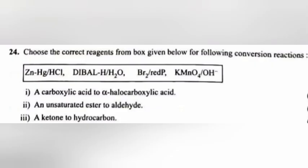Question 24: Choose the correct reagent from the box given below for the following conversion reactions. 24.1: Carboxylic acid to alpha-halocarboxylic acid. Answer: Br₂, red P. 24.2: An unsaturated ester to aldehyde. Answer: DIBAL-H, H₂O. 24.3: A ketone to hydrocarbon. Answer: Zn-Hg/HCl (Clemmensen reduction).